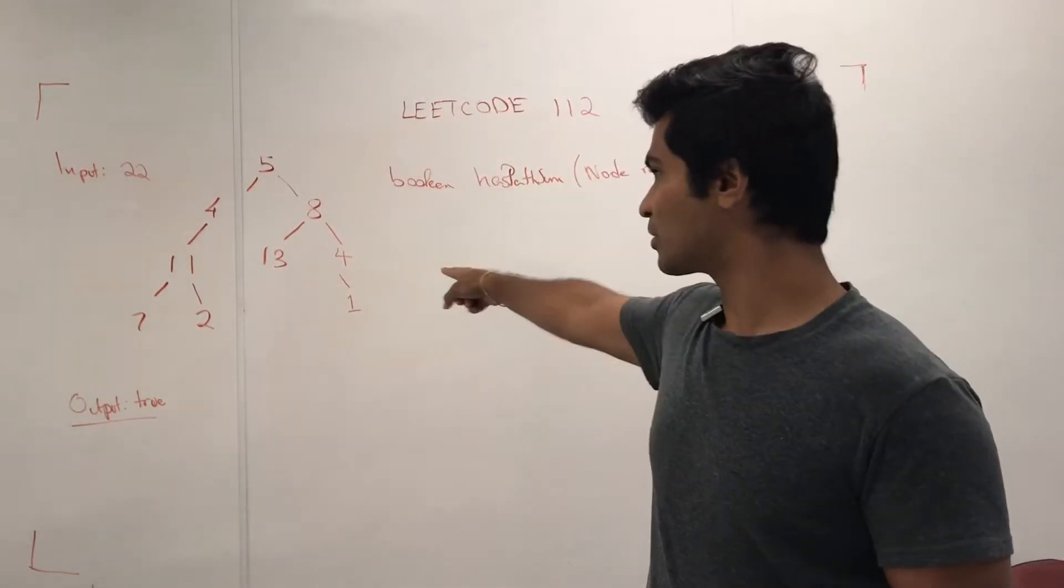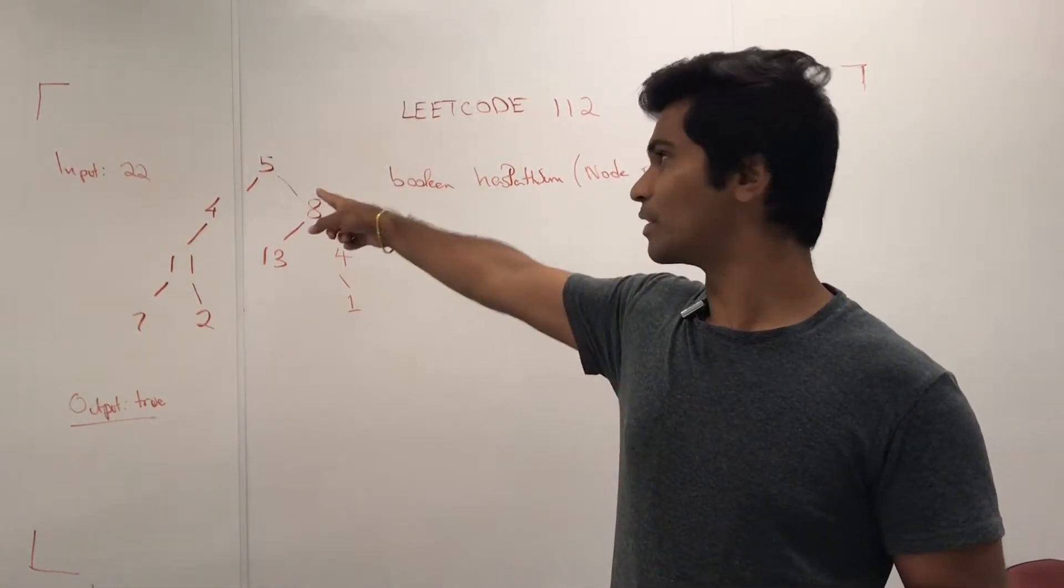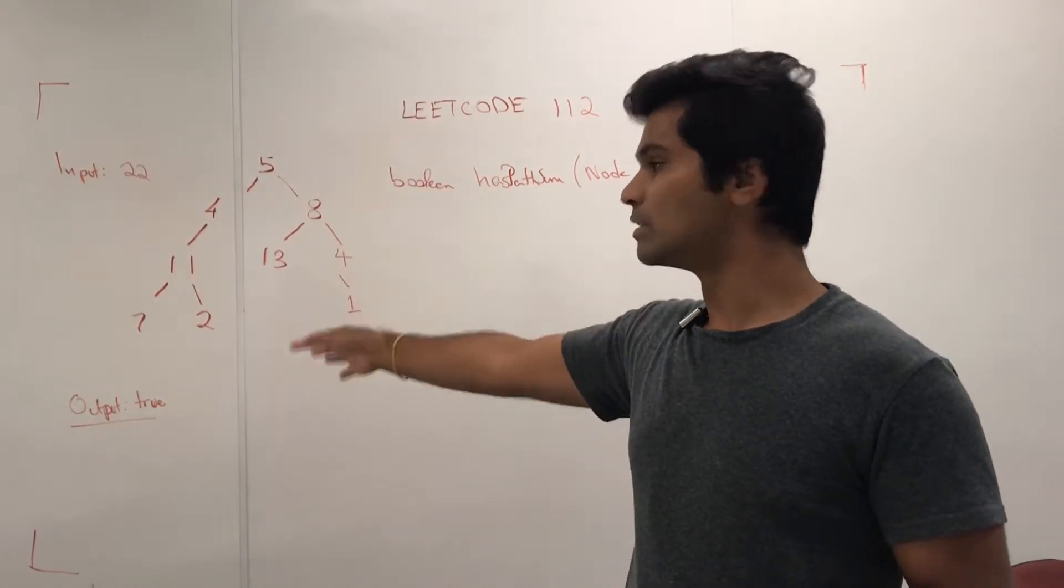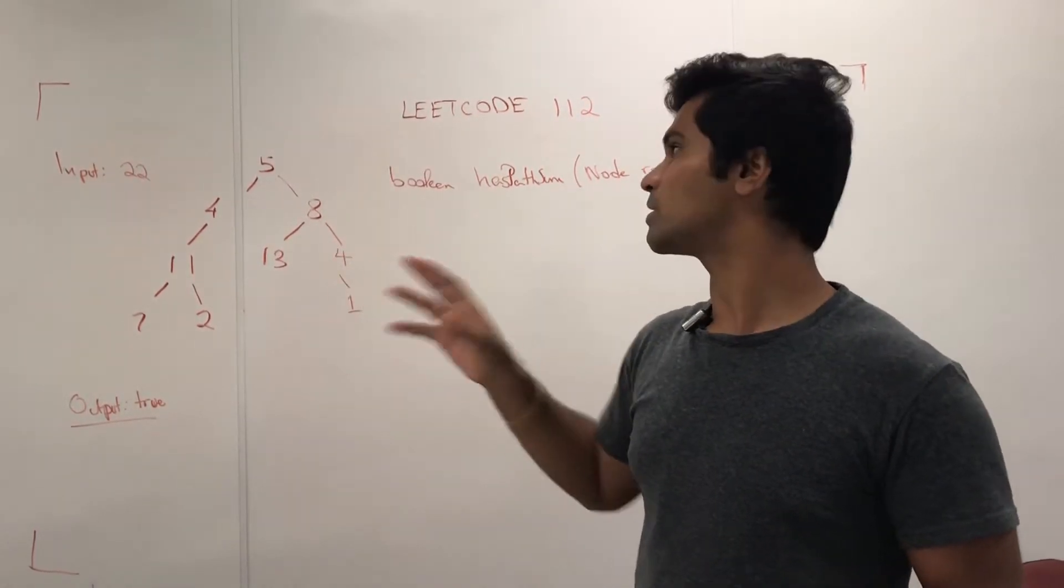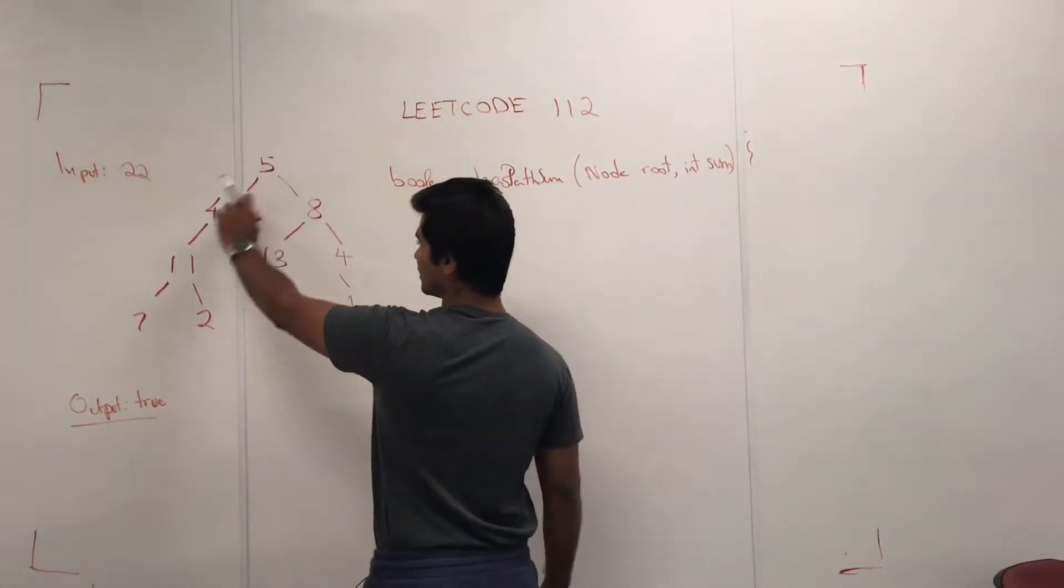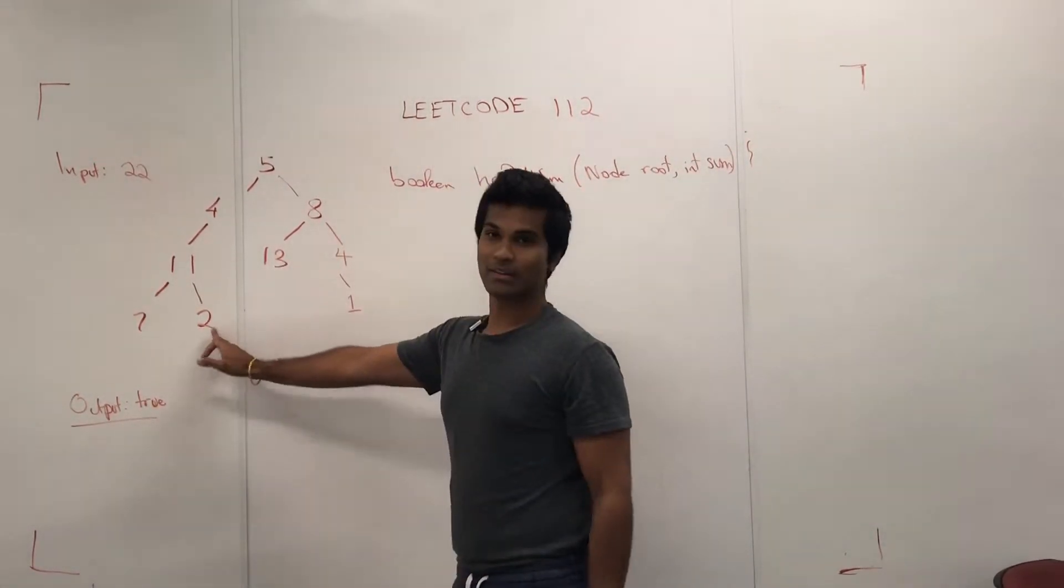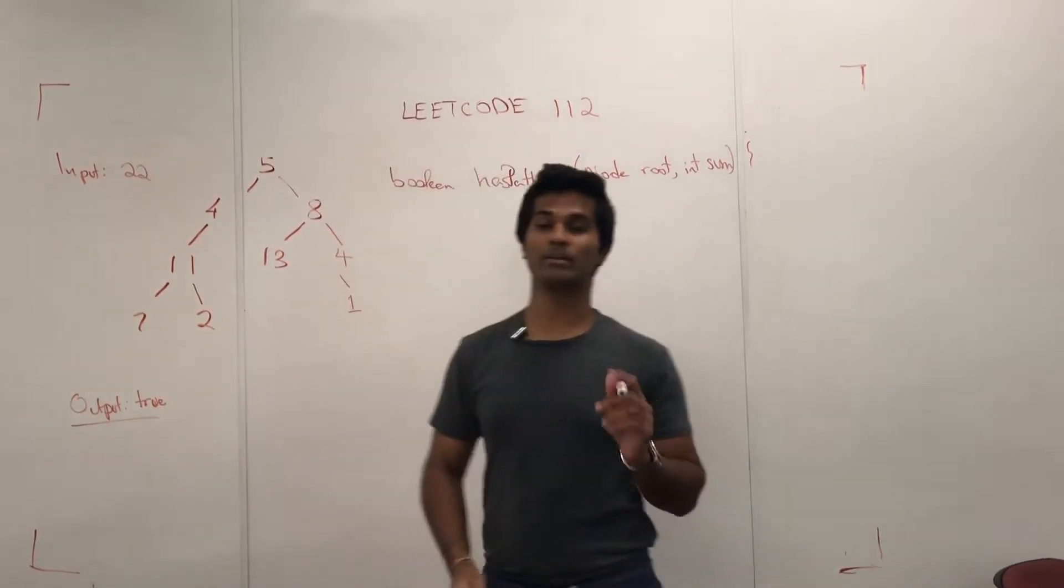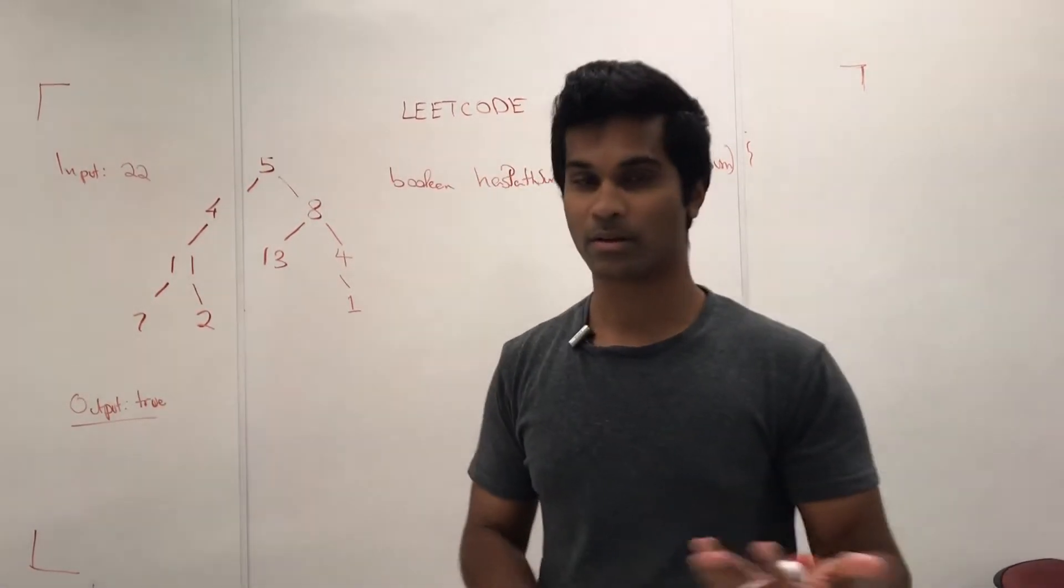Now the input is going to be a tree like that, and then they're going to give us another integer which is the value of the sum, and they want to know if Boolean, true or false, if there exists a path between the root down to the leaf. It has to go from the top to a leaf, and we're going to take advantage of that in the solution I'm going to tell you.